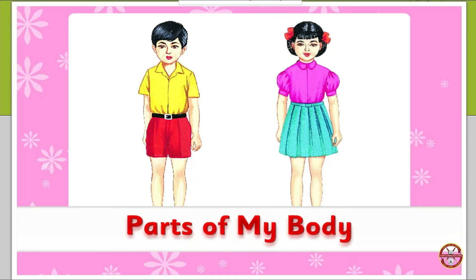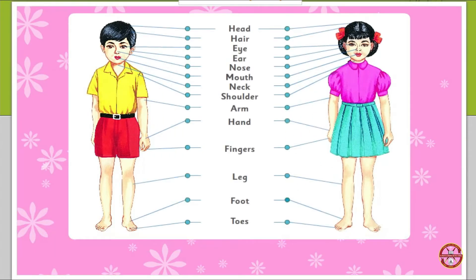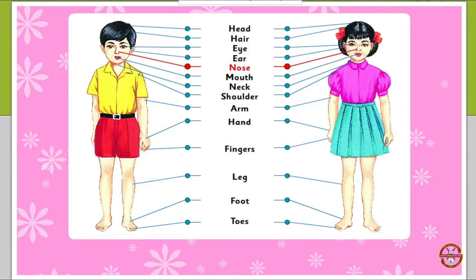Parts of My Body. These are the names of the parts of my body: head, hair, eye, ear, nose, mouth, neck.